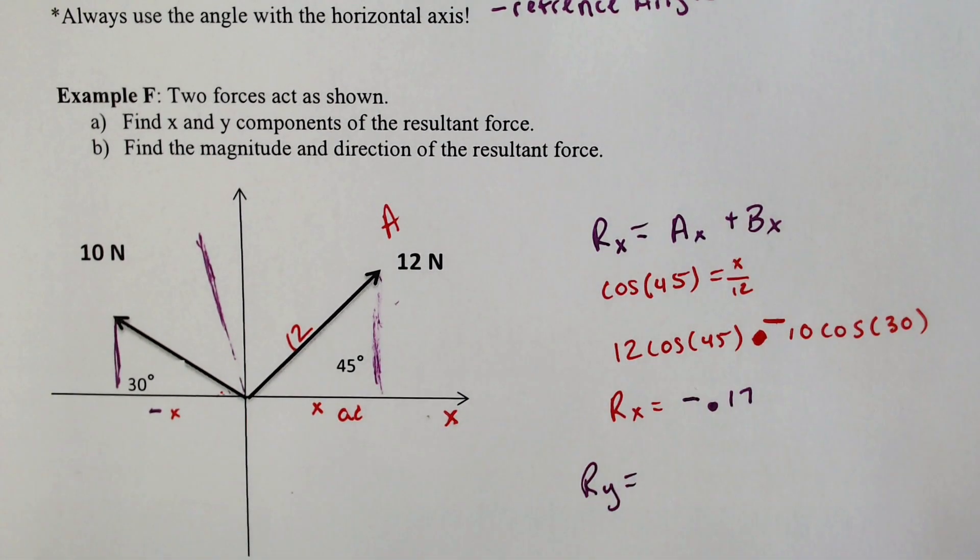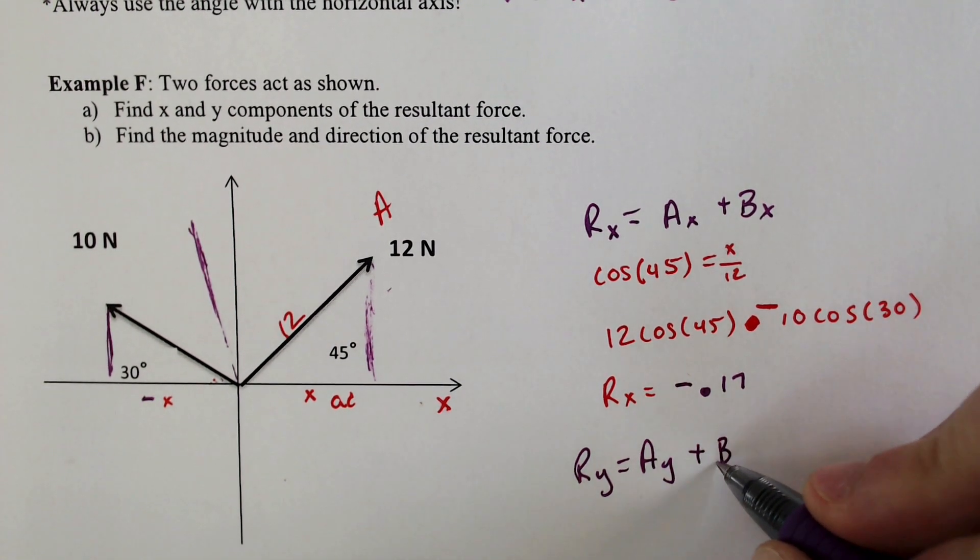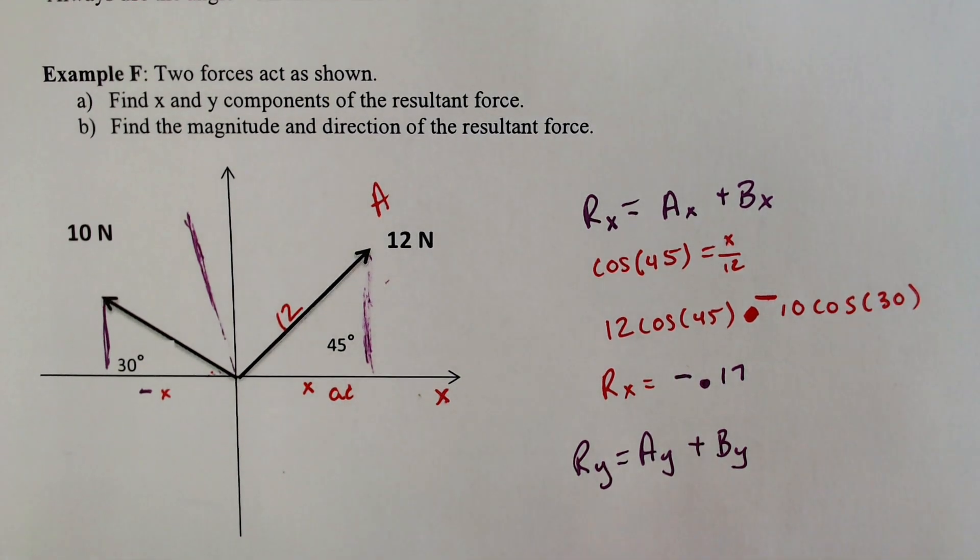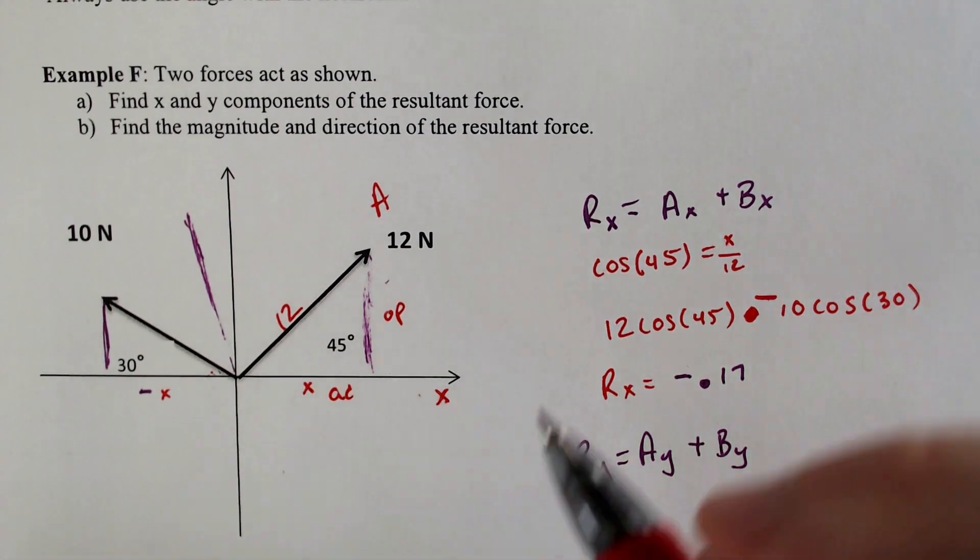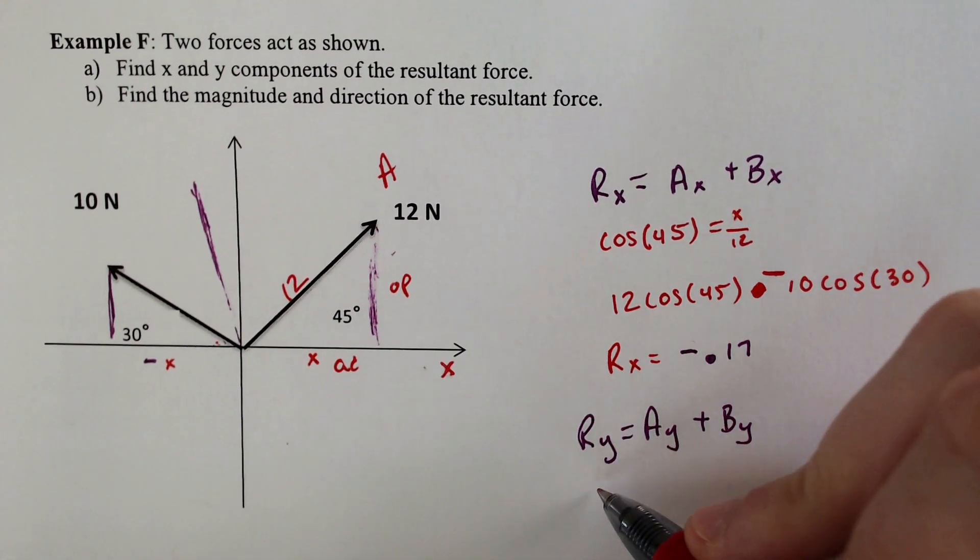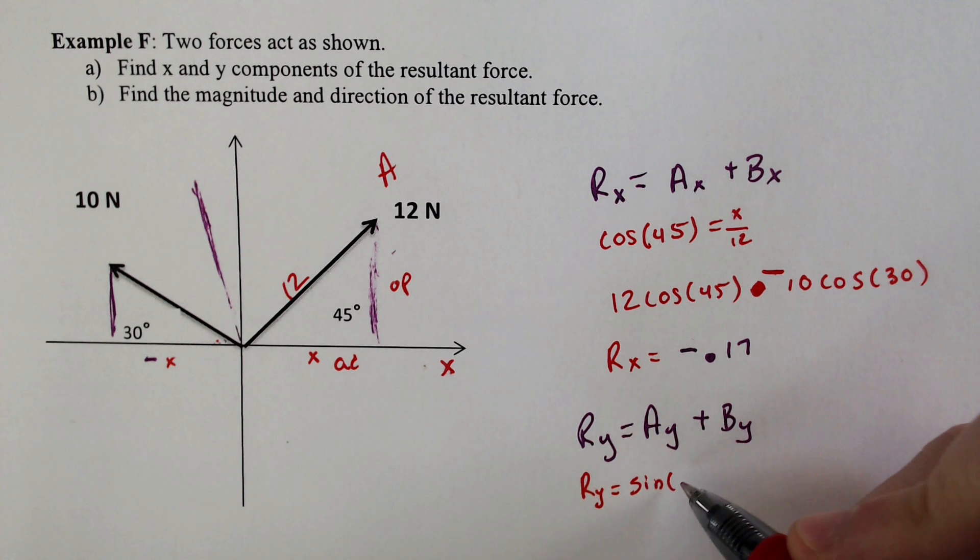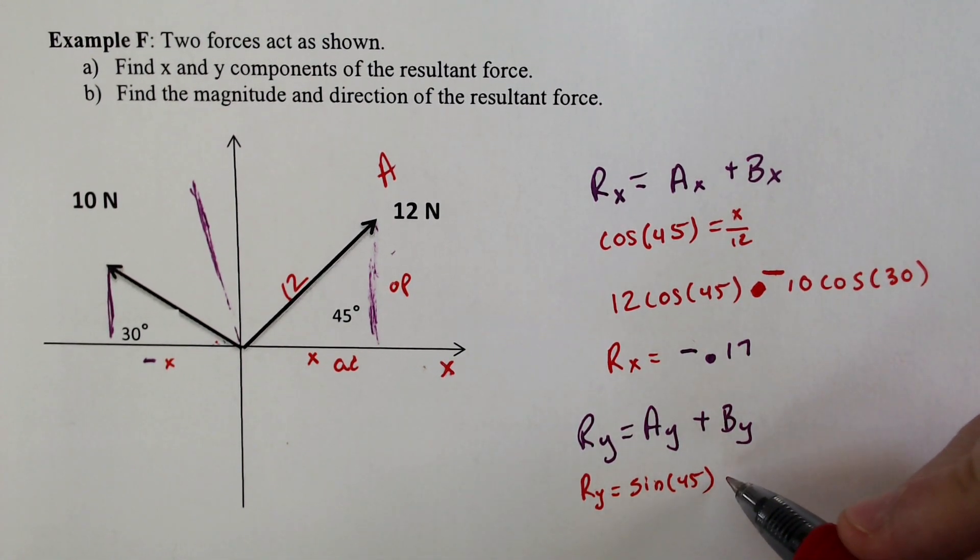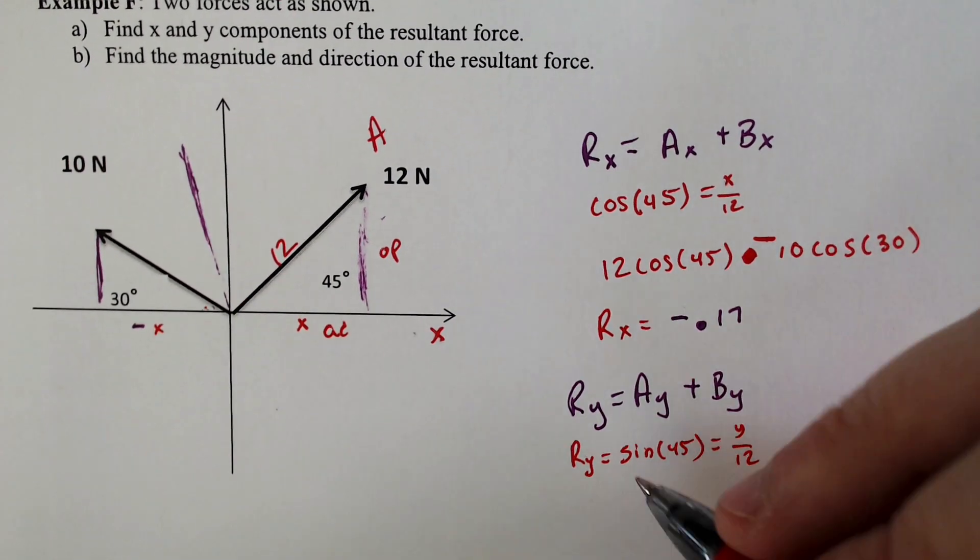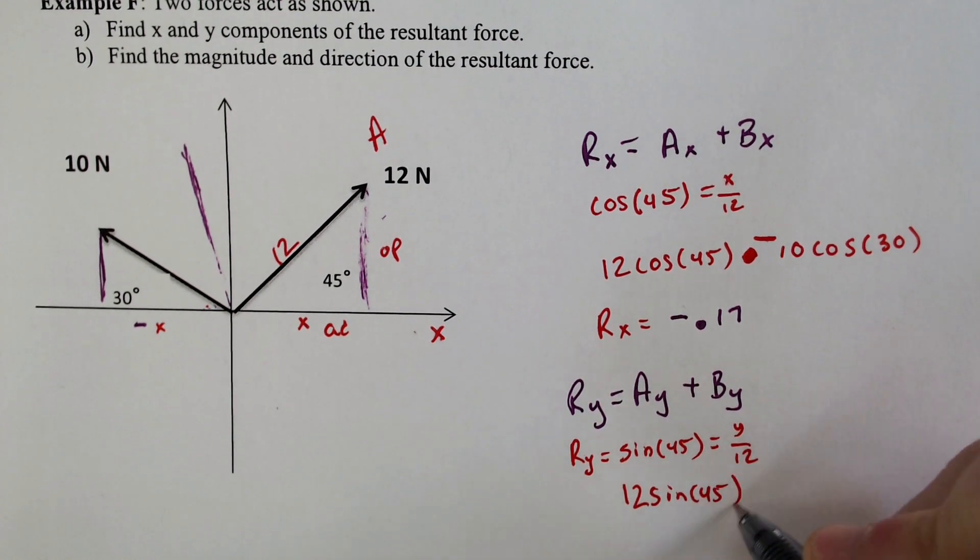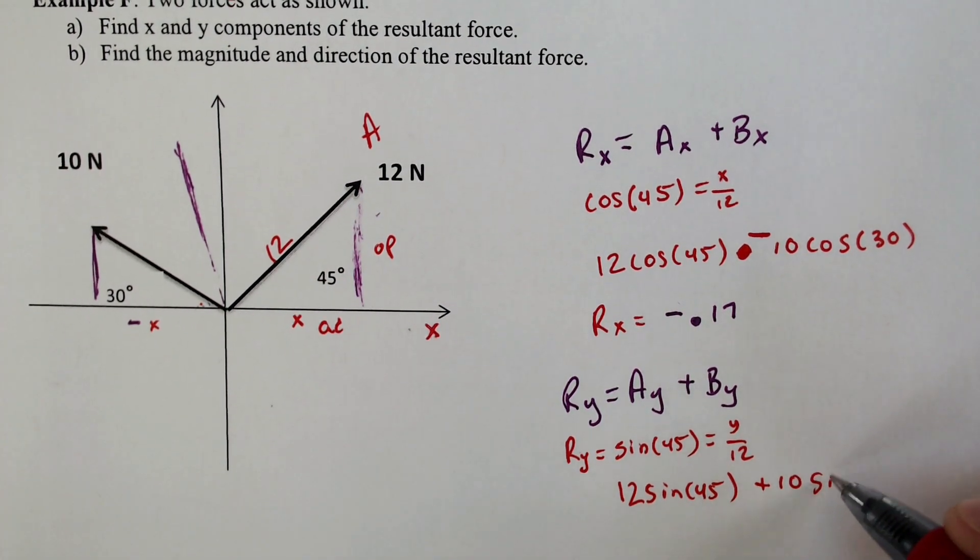So let's find out the y component. Well, the y component is going to be found the same way. The resultant of the y's would equal the resultant of the y's for A, added with the resultant of the y's for B. Well, the only difference that you will have is that instead of looking at your adjacent side, you're going to be looking at your opposite side. And your opposite side is going to be found with sine instead of cosine. So if we did that, the resultant of the y's would be essentially equal to sine of 45 equals opposite over hypotenuse, which would be y over 12, which we would multiply by 12. So it would be 12 sine of 45. Same thing on the other one with the 10 newton, plus 10 sine of 30.